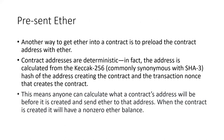Contract addresses are actually deterministic. The address is calculated from the Keccak-256 hash of the address creating the contract and the transaction nonce that creates the contract. So if you know someone is going to create a contract, and you know their transaction nonce and their address, you can calculate what the newly created contract's address will be ahead of time and deposit Ether into that address. When the contract is created, it will already have this pre-existing Ether in it.